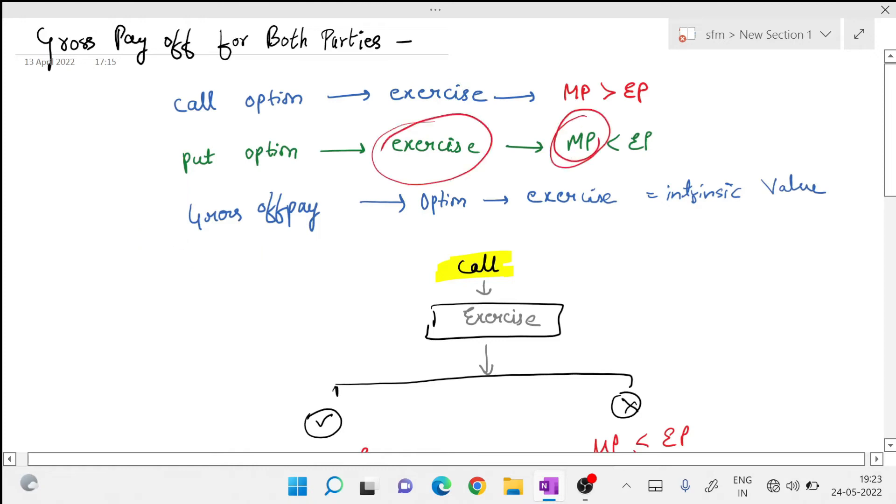Take example, you have one pen of rupees 100, that is market price. Everyone is selling in market for 100, but you get the opportunity to sell that pen at 110. So will you grab it? Ma'am, of course we will sell it at 110. So guys, in this case market price is low and exercise price is high. That is the reason you are using your option.